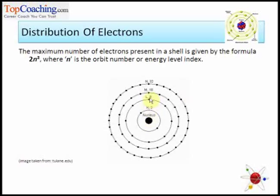In L-shell, which is second from the nucleus, orbit number for L is 2. And hence number of electrons would be 2 into 2 square, which is 2 into 4, which is 8.